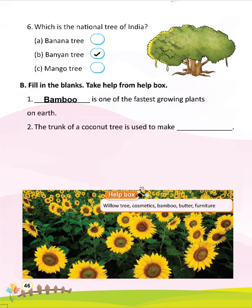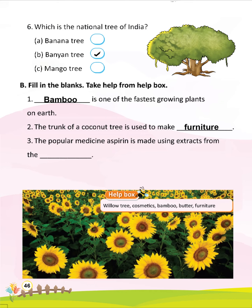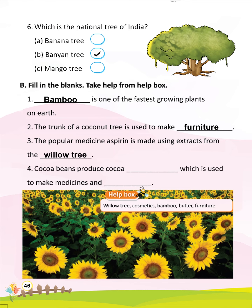Question 2: The trunk of a coconut tree is used to make — Furniture. Question 3: The popular medicine aspirin is made using extracts from the — Willow tree. Question 4: Cocoa beans produce cocoa dash which is used to make medicines and dash — Butter, Cosmetics.